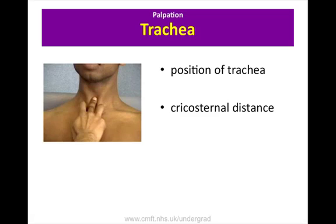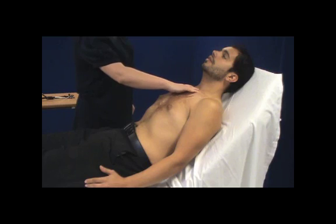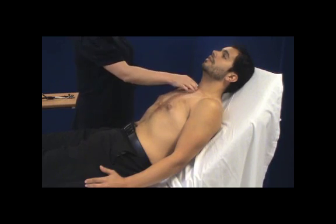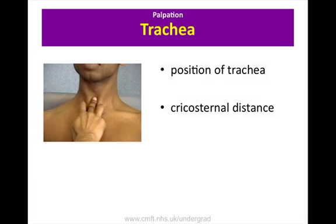Before attempting to check that the trachea is central, ask the patient: 'I would like to press on your windpipe — it may be a little bit uncomfortable.' Place the index and ring fingers over the manubrium sternae on either side and use the middle finger as the exploring finger to feel the tracheal rings for tracheal deviation. Then check the cricosternal distance — the distance between the cricoid cartilage and the suprasternal notch. It is usually three or more finger breadths and is shortened in hyperinflation.